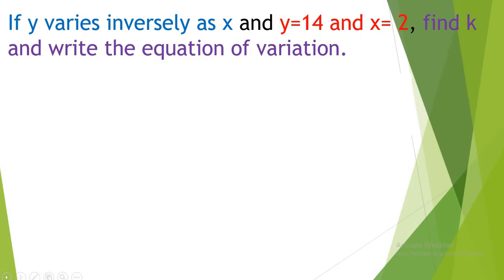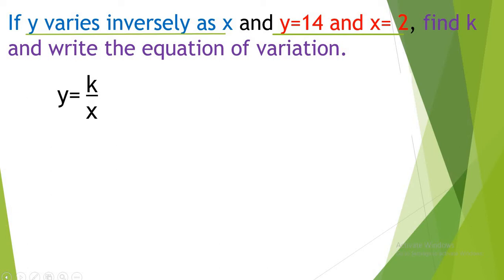Now let's have an exercise. If Y varies inversely as X, and Y is equal to 14 and X is equal to 2, find K and write the equation of variation. Since the situation is inverse variation, we write Y is equal to K over X. Our given values are Y is equal to 14 and X is equal to 2, and we are looking for the constant of variation K. We substitute the values: 14 is equal to K over 2.